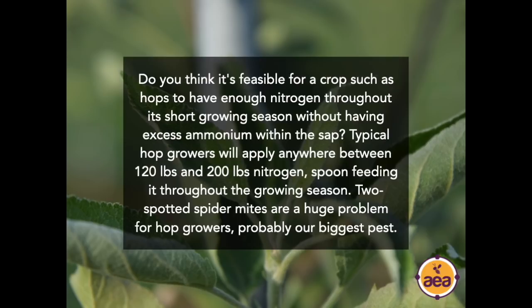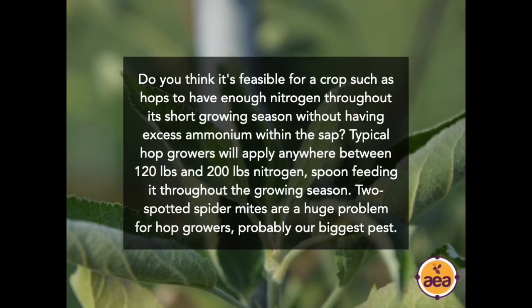Question from Andrew Jocks: is it feasible for a crop like hops to have enough nitrogen throughout its short growing season without having excess ammonium in the sap? Typical hop growers apply 120 to 200 pounds of N spoon-fed through the season, and two-spotted spider mites are a huge problem. The answer is definitely yes — it is absolutely possible to have enough nitrogen without excess ammonium. We've actually observed and done that with hop growers we've worked with already. Connect with our AEA team for specific recommendations.